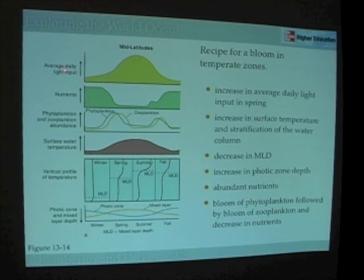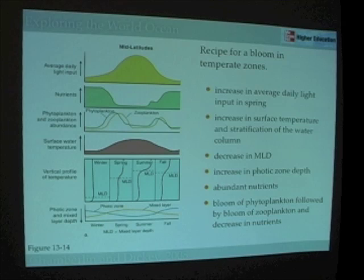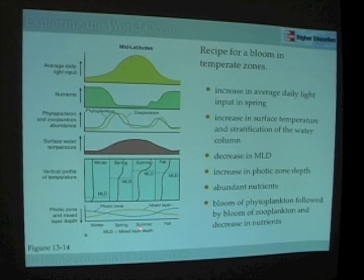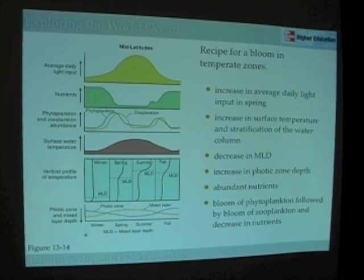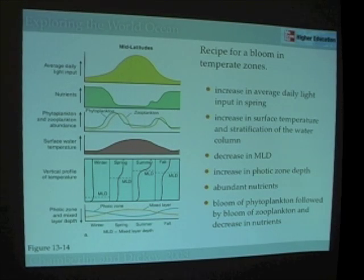From figure 13-14, we see a variety of different things that happen through the seasonal cycle. The most important axis that relates to all these particular graphs is the axis of time. So we see winter, spring, summer, and fall. Now let's take a look for mid-latitudes, those temperate zones where we live here in Southern California — the region between 23.5 degrees north and 66.5 degrees north, or in the Southern Hemisphere, between 23.5 and 66.5 degrees south.